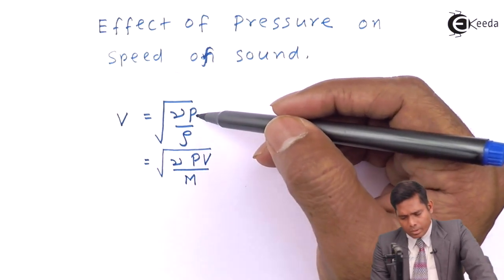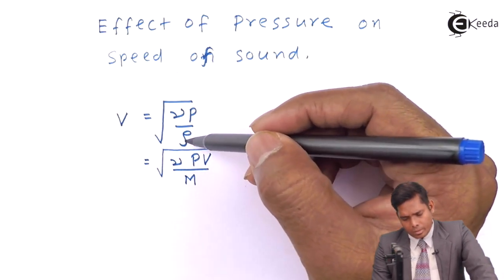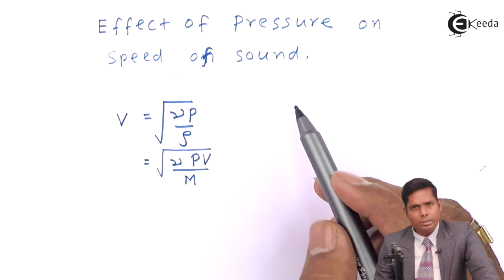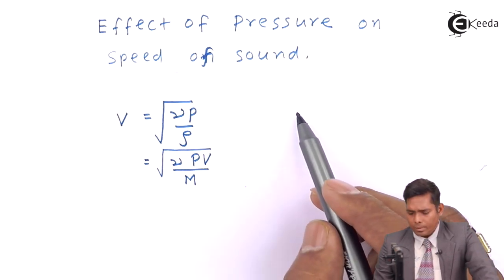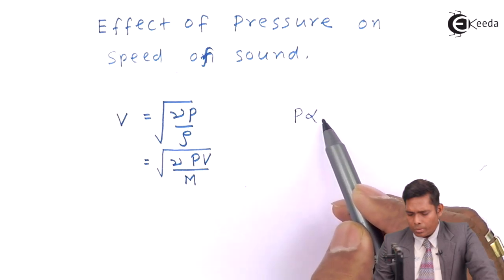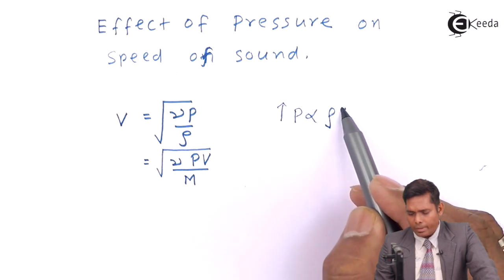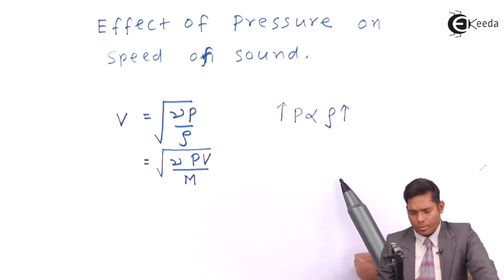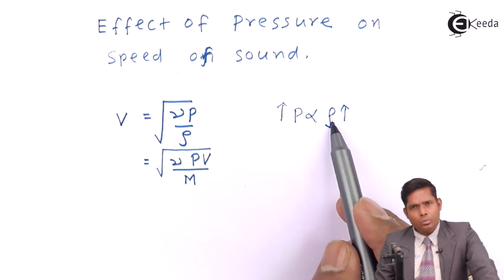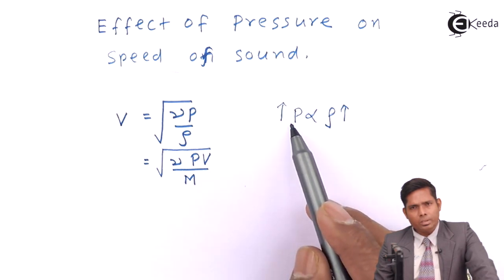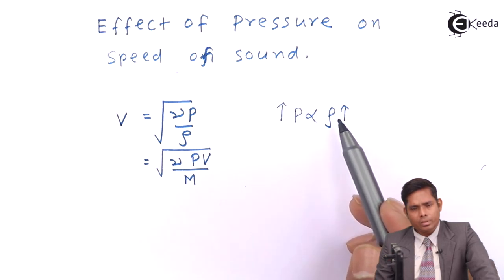Now from here, you can see there is a relation: pressure is proportional to density. That means increase in pressure is followed by increase in density. If you increase the density two times, then the pressure will also increase by two times, so that will cancel out each other.